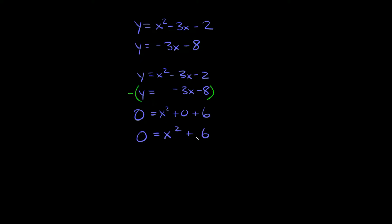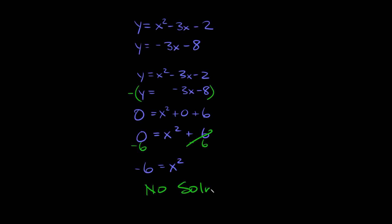So we're just trying to solve for x. We subtract 6 from both sides — those cancel out — and we get negative 6 equals x squared. So x squared equals negative 6. This is a problem because there's no number you can square that gives you a negative number. Whenever you get x squared equal to a negative number, that means there are no solutions, because squaring any number always gives you a positive number.